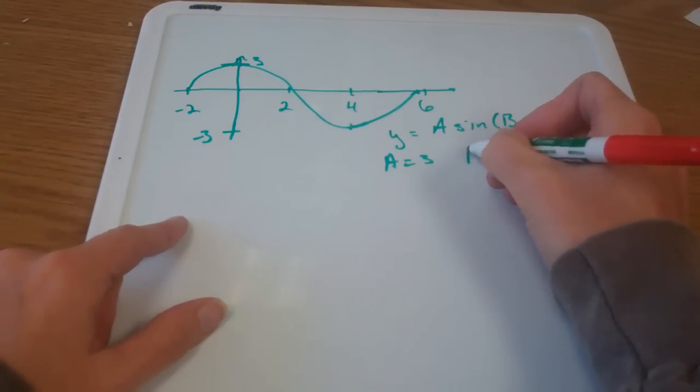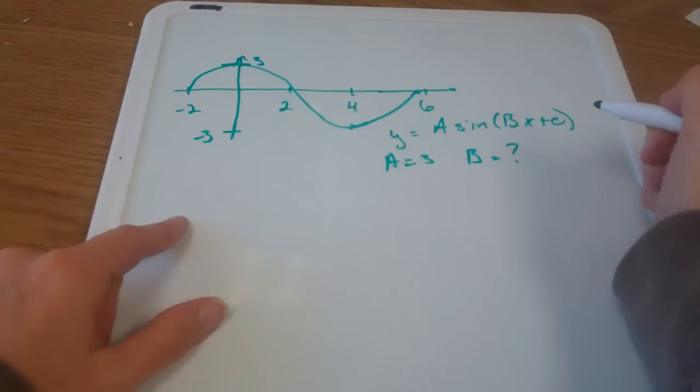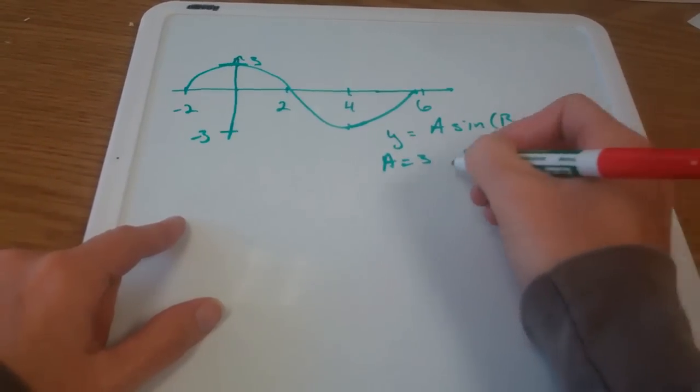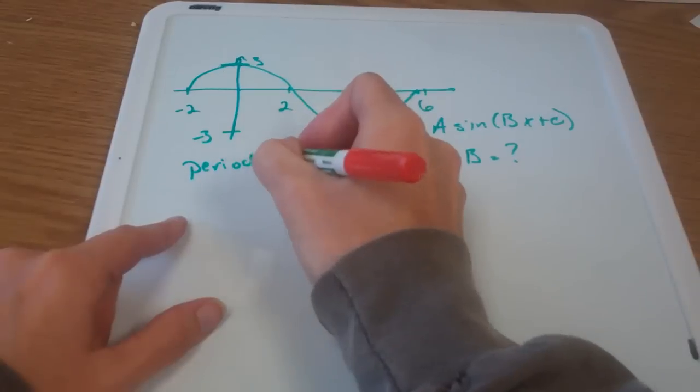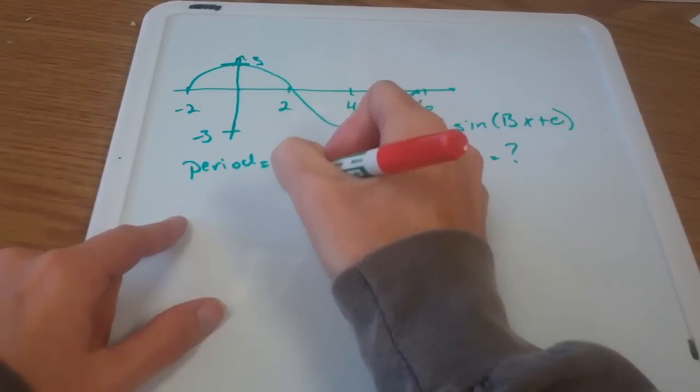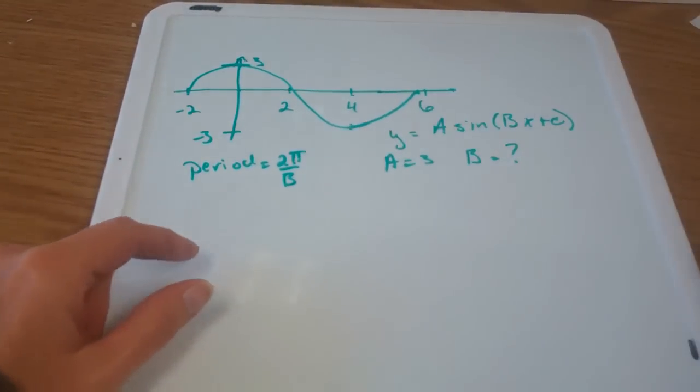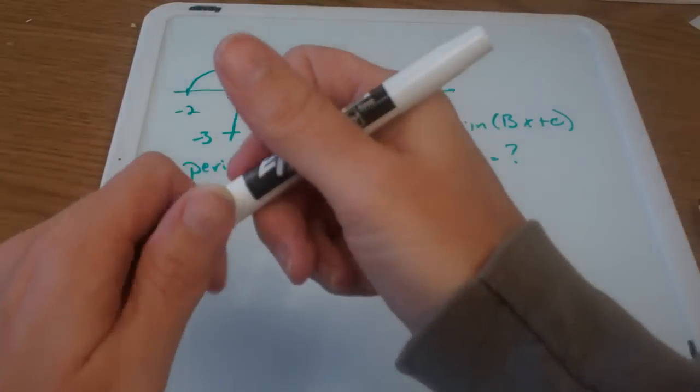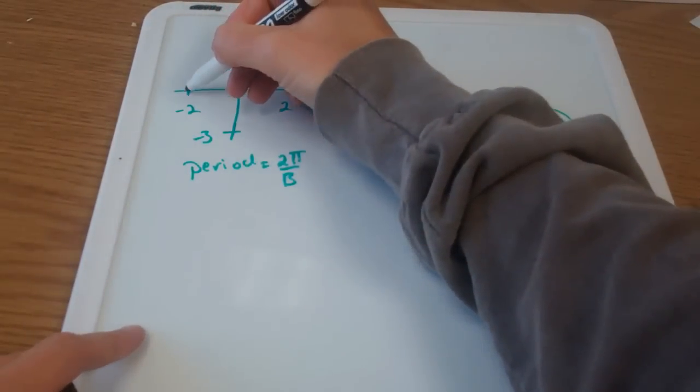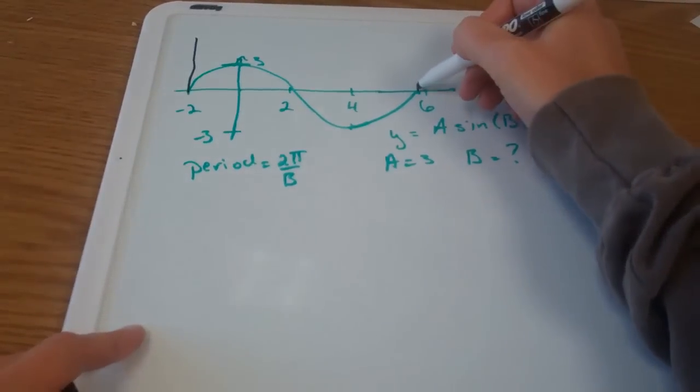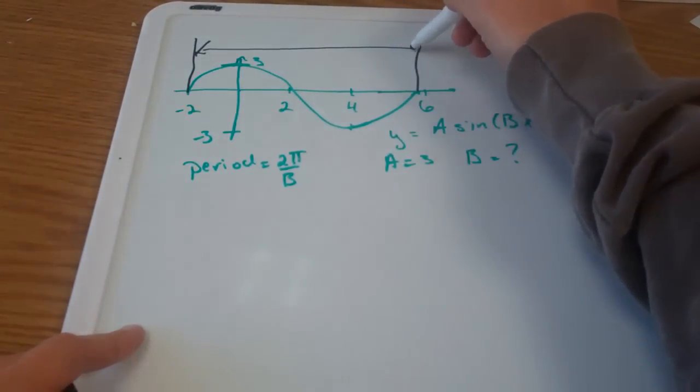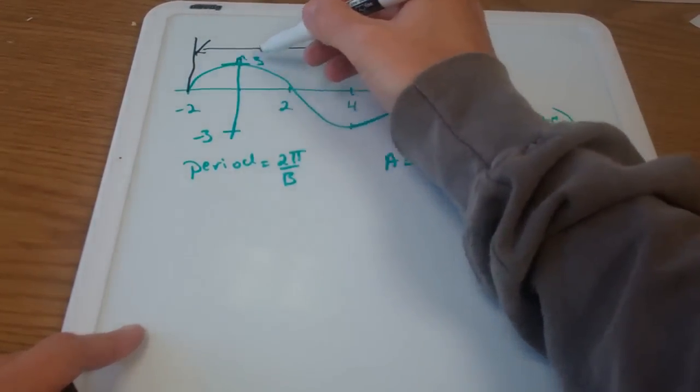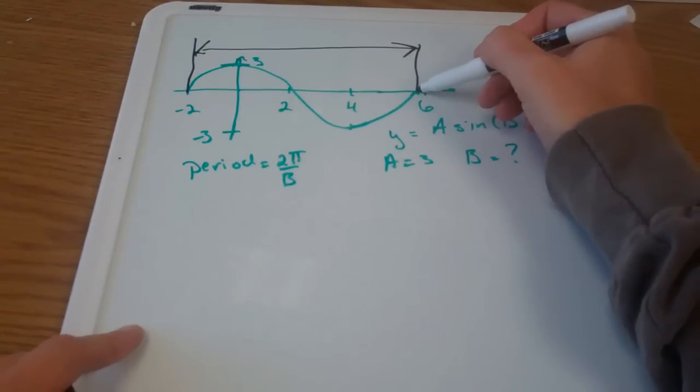Now b, that's my next one. So I know that the period is equal to 2π over b. The period is the length of one cycle. So if I look up here, I'm looking for what is the distance that it takes for one cycle of sine to complete.